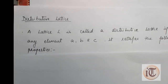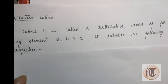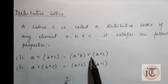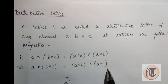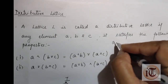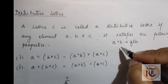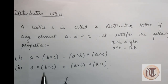A lattice L is called a distributive lattice if for any elements A, B, and C it satisfies the following properties: A ∧ (B ∨ C) = (A ∧ B) ∨ (A ∧ C), or A ∨ (B ∧ C) = (A ∨ B) ∧ (A ∨ C). Here ∧ means greatest lower bound and ∨ means least upper bound. If one of these conditions is satisfied, then that lattice is called a distributive lattice.